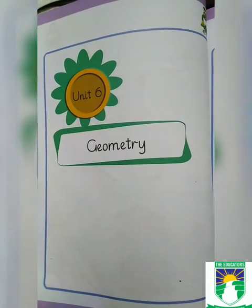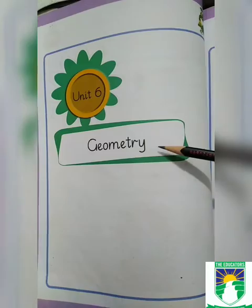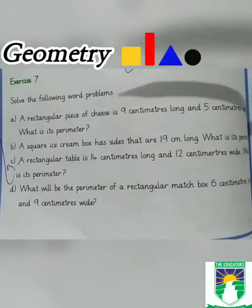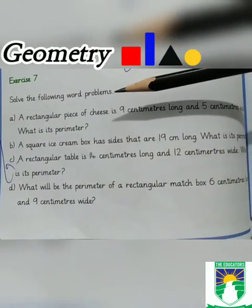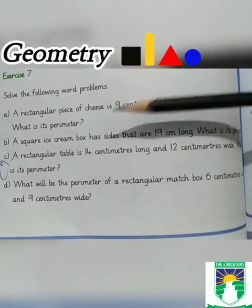Assalamu alaikum Grade 3, how are you all? Today we discuss Unit Number 6, Geometry, Exercise Number 7. Solve the following word problems. Question number A: A rectangular piece of cheese is 9 centimeters long and 5 centimeters wide. What is its perimeter?